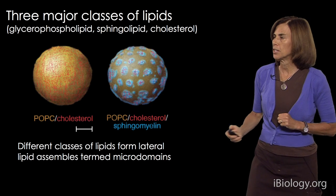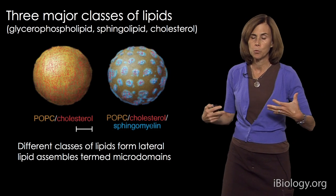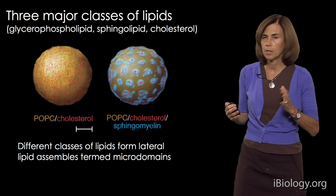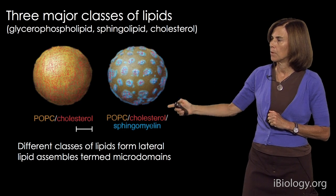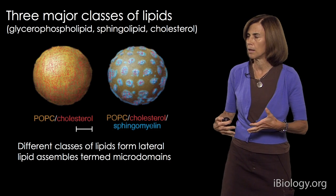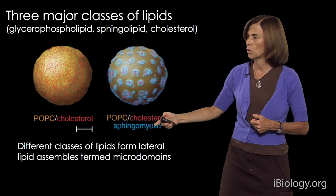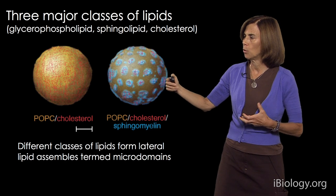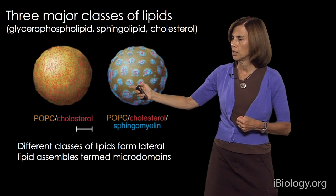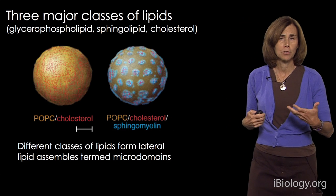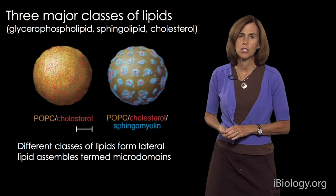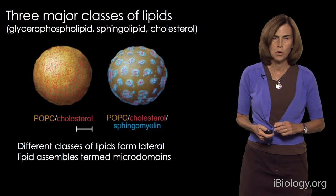When these different lipids are recombined in artificial vesicles, you can see essentially segregation of these lipids into different microdomains, with cholesterol and sphingolipids coalescing into discrete microdomains relative to the glycerophospholipids, which distribute more uniformly within these vesicles.